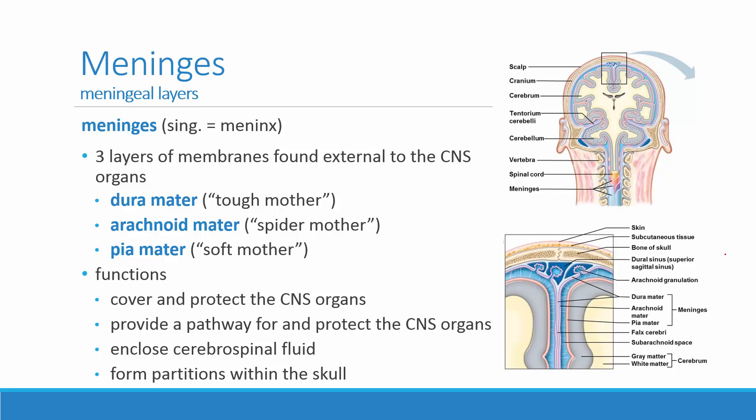The functions of the meninges: they cover and help to protect the central nervous system; they provide a pathway for the blood vessels that supply the CNS organs with nutrients and oxygen; and they enclose the cerebrospinal fluid, forming almost like bubble wrap — because the cerebrospinal fluid is captured there, it forms an insulating layer that protects against bumps and jostling.